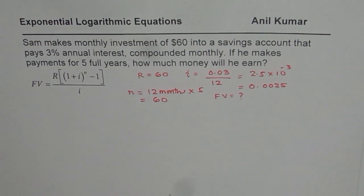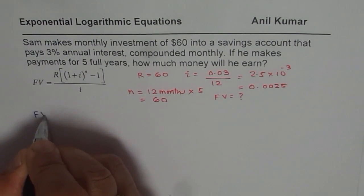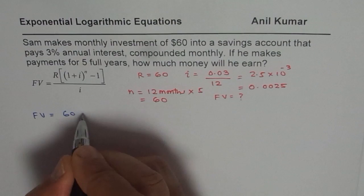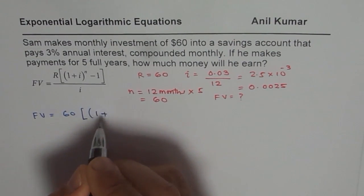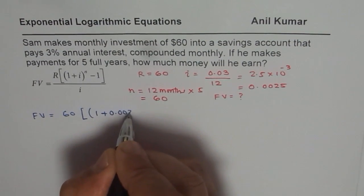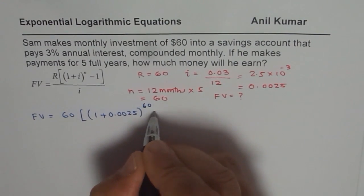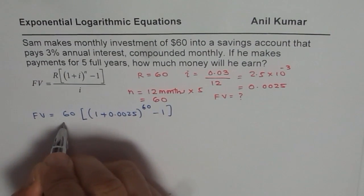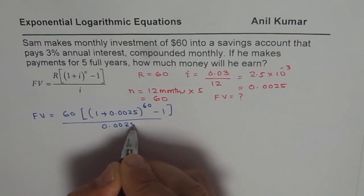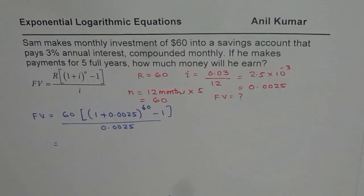Let us substitute these values and figure it out. Future value for us is R, which is 60, so 60 within brackets, times (1 plus i, which is 0.0025) to the power of N, which is 60, minus 1, divided by i, which is 0.0025. Let us see how to use calculator to calculate this value.